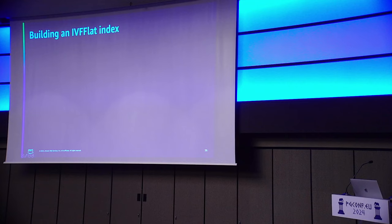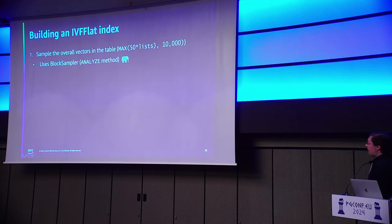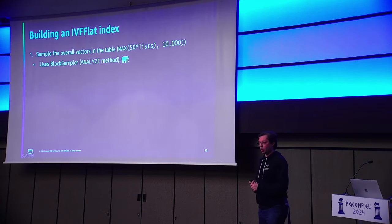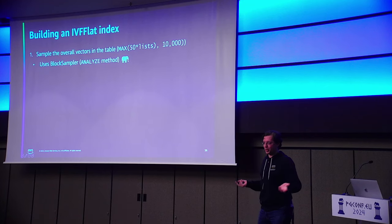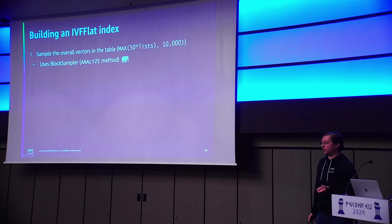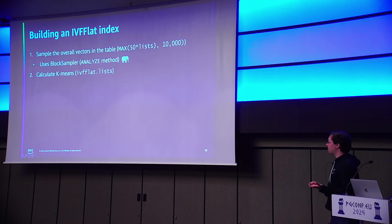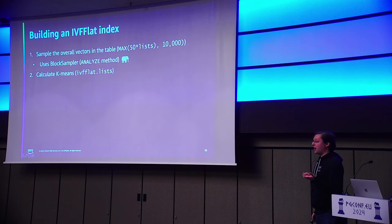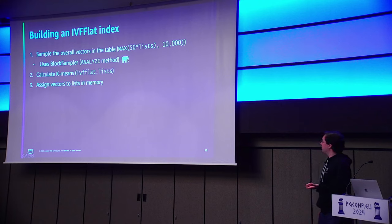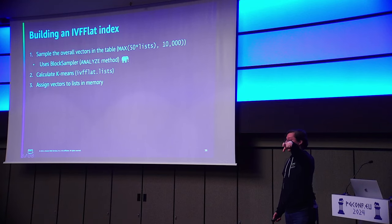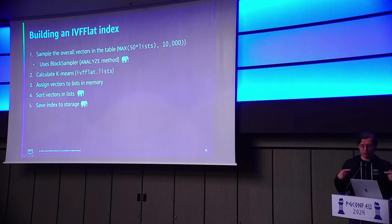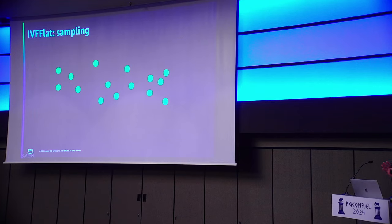How do we build an IVF flat index? This is our cluster-based method. The first thing is that you actually need to have your data preloaded — if you don't have data already in your table, you can't build a cluster because you don't know where your data actually is. The way we figure out how to build the clusters is by sampling the data. No matter the size of your data set, you'll sample about 10,000 vectors when you build your cluster, leveraging Postgres Analyze capabilities. There's a parameter in IVF flat called IVF flat lists — that tells you the number of centers. Then from there, you assign all the vectors in your table to a particular list, do a sorting operation, and save the index to storage.